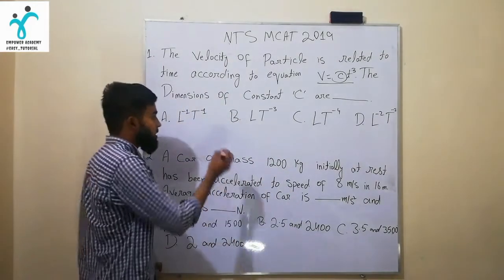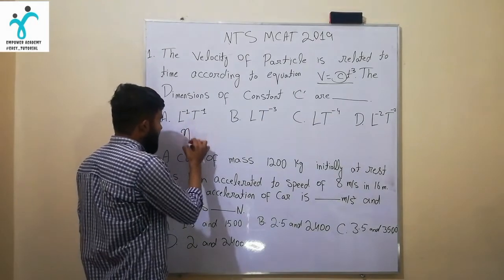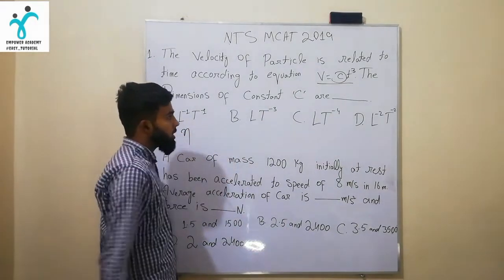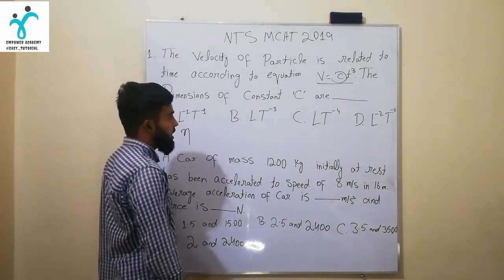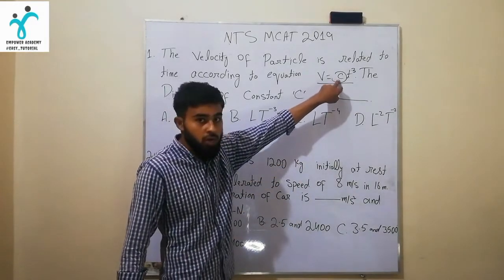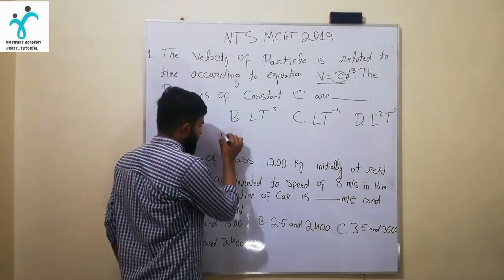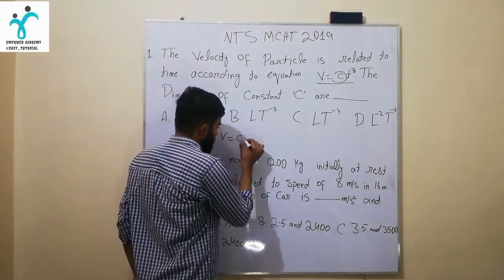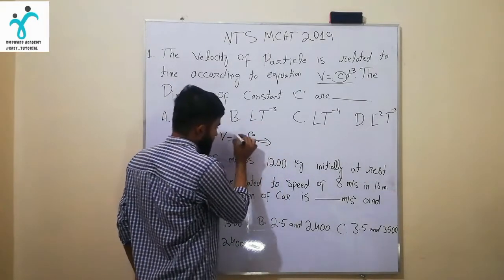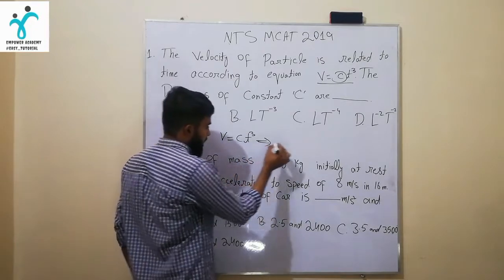You can see the same example here, which shows the constant value of the calculation. The equation is called C = PQ.